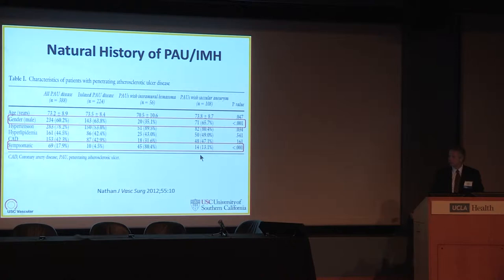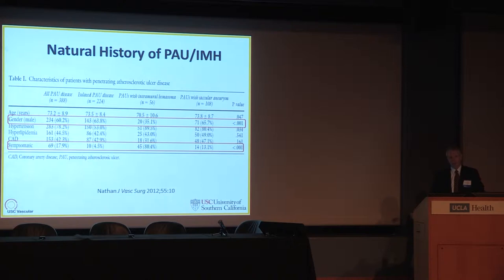First of all, penetrating aortic ulcer — this is kind of an unknown for us with regards to the natural history and the indications for treatment. We really don't have a good handle on patients with this problem, and for vascular surgeons who haven't dealt with much of the thoracic aorta in earlier practice before the endovascular era, these ulcers are a unique and different pathology for us to take care of.